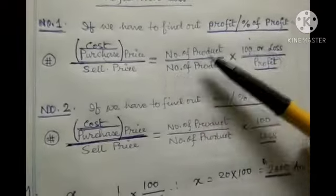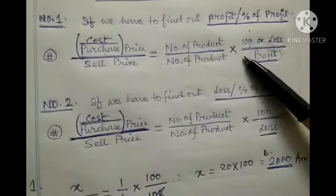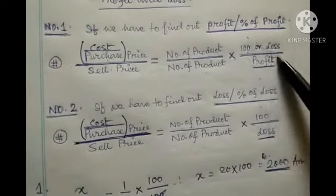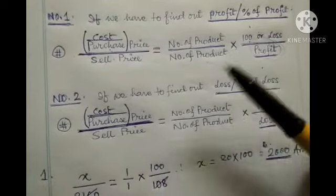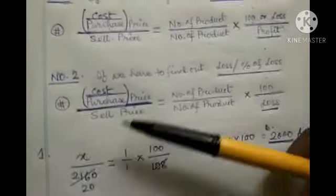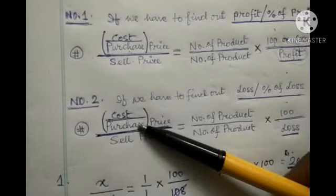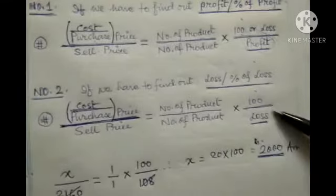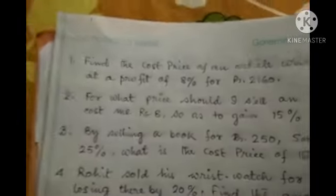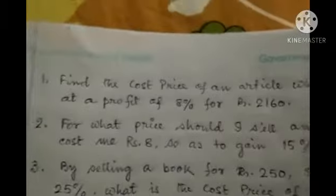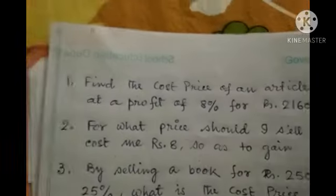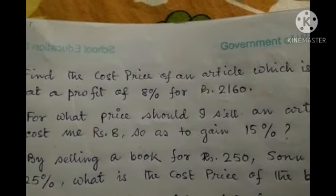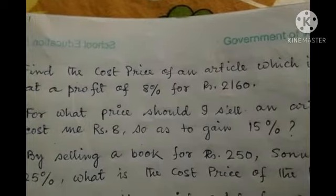The formula is: cost price divided by sale price equals number of products divided by number of products, into 100 plus profit percent, when profit percentage is given. The other formula uses 100 minus loss percent when loss percentage is given. Problem 1: Find the cost price of an article sold at a profit of 8% for rupees 2160. Here 2160 is the sale price and the profit percentage is 8.